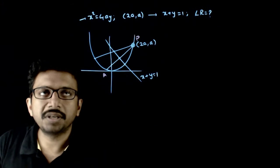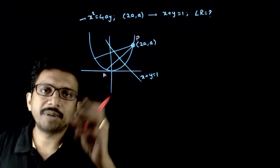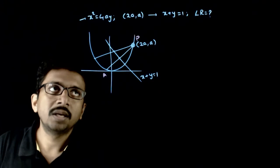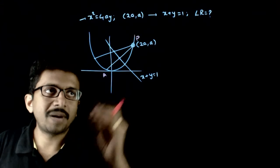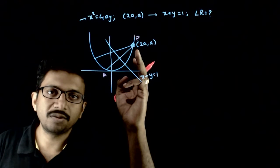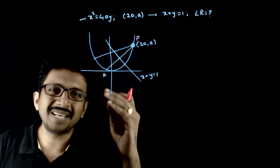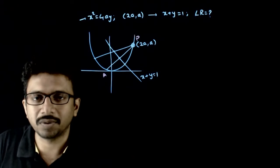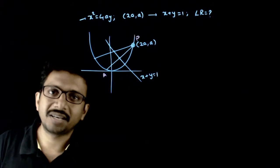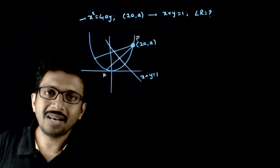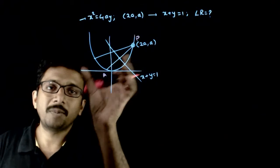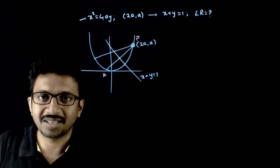Welcome students. In this question, you are given a parabola x² = 4ay, which is a vertical parabola. Two chords passing through the point (2a, a) are being bisected by the line x + y = 1. Given this, what is the latus rectum of the parabola x² = 4ay? That is what is asked.